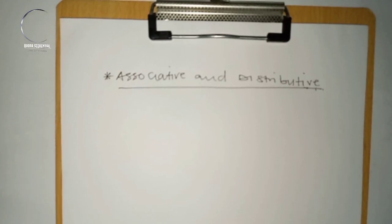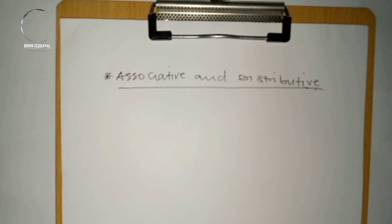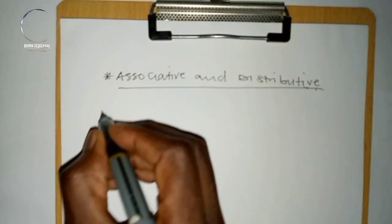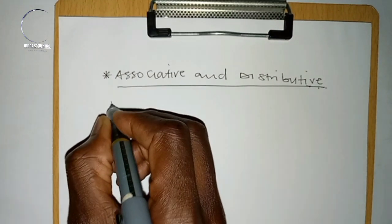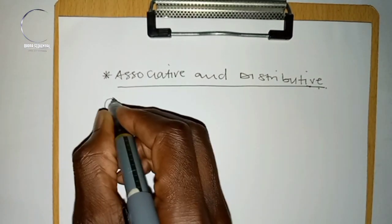In this video, we are going to concentrate on how to use associative and distributive properties. These two properties come in mostly when you want to use the laws of complementation.